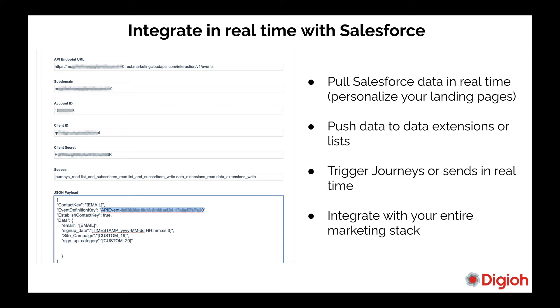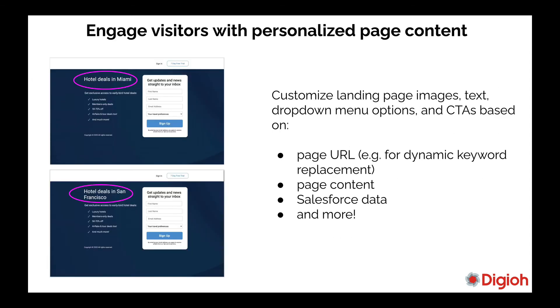Anything that comes in, we can grab it and pass it directly to Marketing Cloud or Salesforce — it integrates with your entire marketing stack. We can also pass custom events to any analytics systems, like Google Analytics, so you can see end-to-end conversion analysis and ROI on every single submission that comes through on your landing pages.